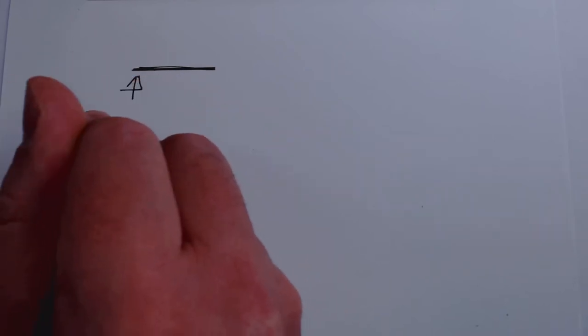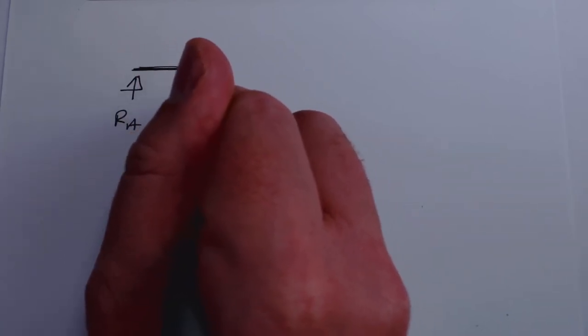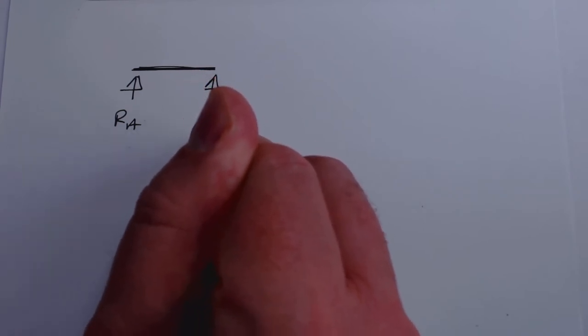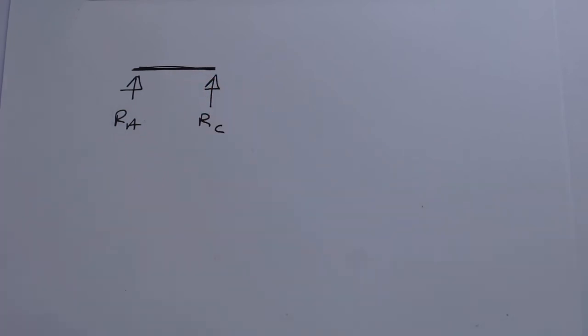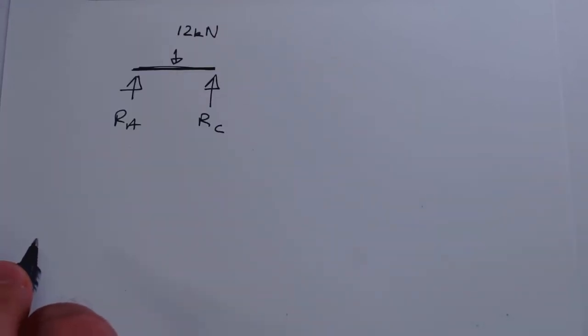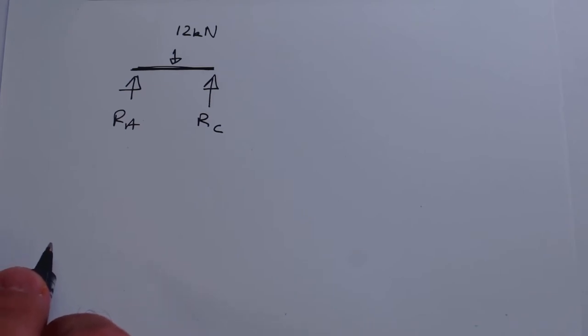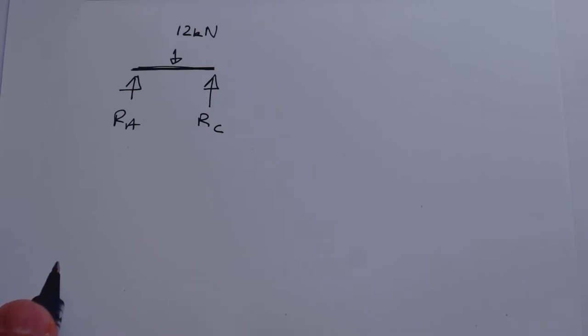We start off talking about a beam on two pivots. We're not going to put any sideward force on this beam, and we're going to locate a mass bang in the middle of 12 kilonewtons. If we're going to tackle this problem using the approach that the sum of forces in the x-direction and the sum of forces in the y-direction have to be zero, what do we get?